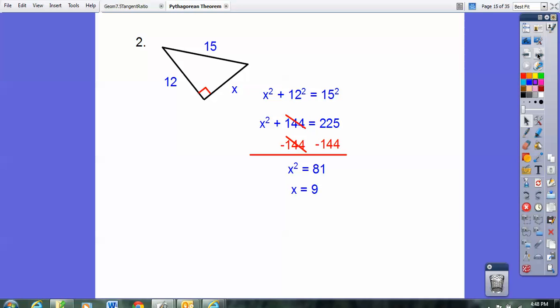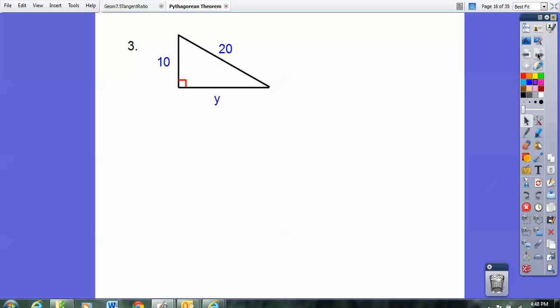Here's one where we don't get nice perfect squares, so you have to simplify your square root. So here 20 is the hypotenuse, so I'm going to go 10 squared plus Y squared equals 20 squared. 10 squared is 100, 20 squared is 400, and then I'm going to subtract 100 from both sides, and you get 300.